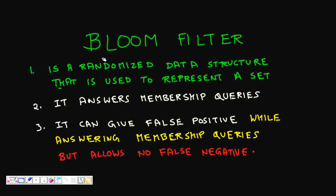In this lecture we will learn about one probabilistic data structure which is known as a Bloom filter. This data structure is a randomized one and is used to represent a set of elements, and then you can query it with the membership of elements. The basic idea is: let's say you have a firewall.